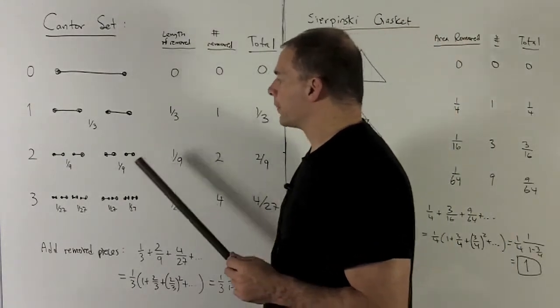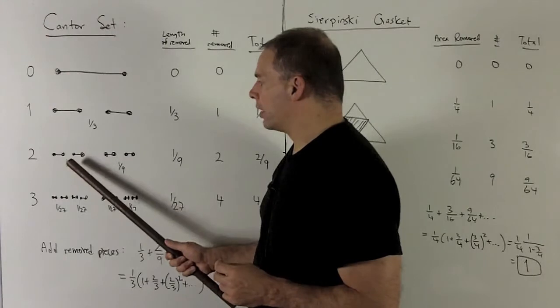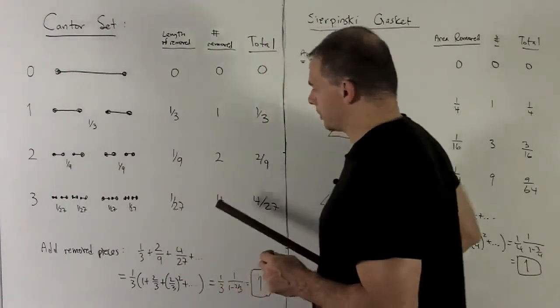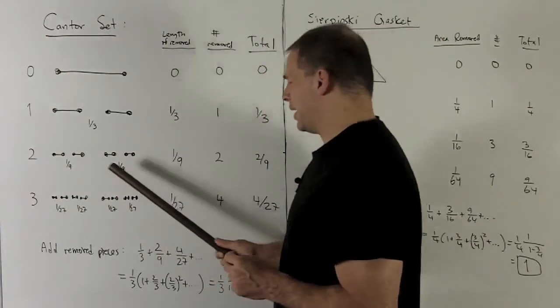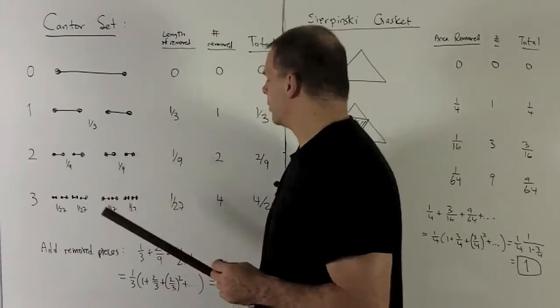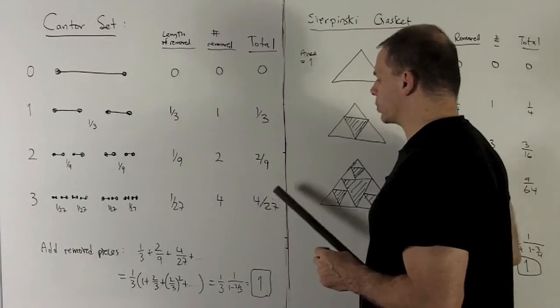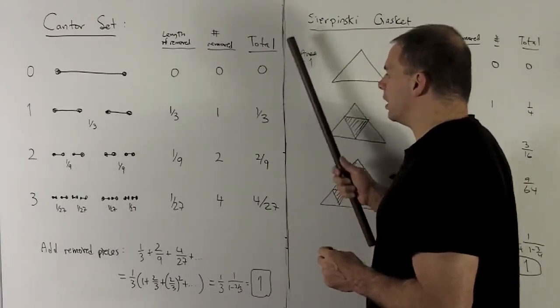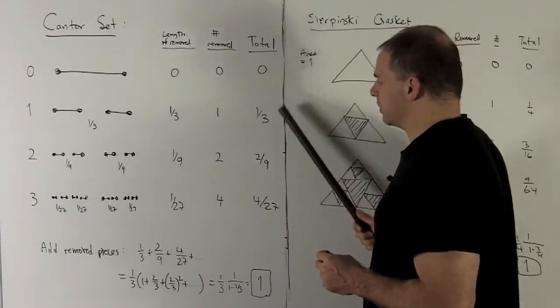Go to stage three. I'm going to remove the middle third of each of these four segments. So we have four segments. The length of the middle third of each of those is going to be one third times one ninth, which is one twenty-seventh, so I remove four twenty-sevenths.